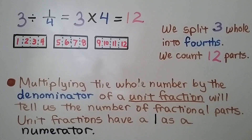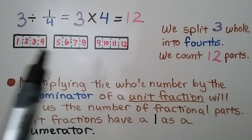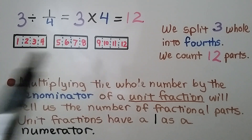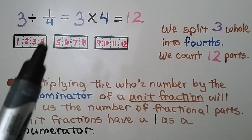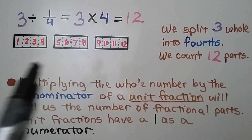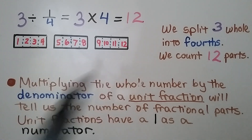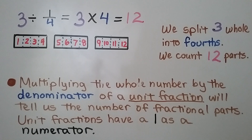Here's a model of what we did for 3 divided by 1 fourth. We split 3 whole rectangles into fourths and count 12 parts. Multiplying the whole number by the denominator of a unit fraction will tell us the number of fractional parts. Remember, unit fractions have a 1 as a numerator.